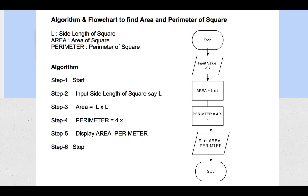In the corresponding flowchart, you have the start and stop symbols. For input you use the input/output symbol for the side length L. Next you have the processing rectangle where area and perimeter are calculated. Then you print the area and perimeter using the output symbol. That is the flowchart to find the area and perimeter of a square.